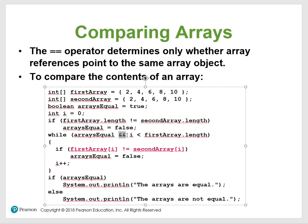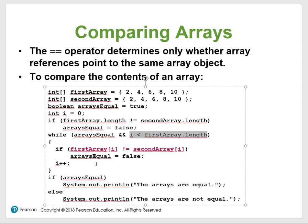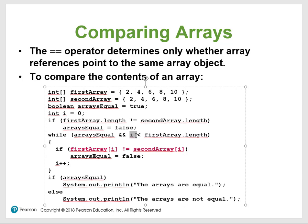In order for this AND to be true, both arrayEqual and i less than array length must be true. So you enter the loop and this algorithm compares elements one by one. If any element is not equal to the other, arrayEqual gets set to false. Then you update i — that's your loop increment — which controls the number of iterations.